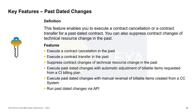For past-dated changes, we did a lot of research into how things are connected. Past-dated changes for most processes were already working, but we deep-dived into some special change processes. We can now do cancellation in the past, execute contract transfers in the past, and we implemented a check: if you have a technical resource change in the past and there is already usage on it, you will get an error — because this would lead to distribution errors that are hard to fix, and we now check this in advance.